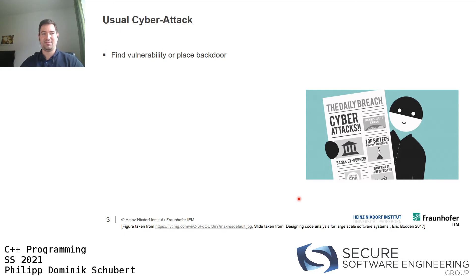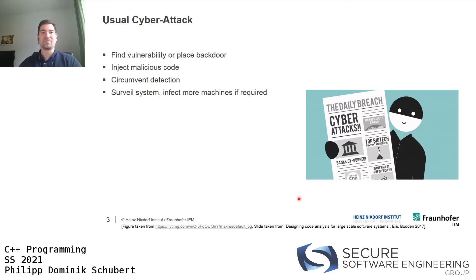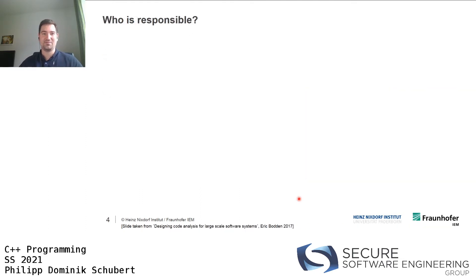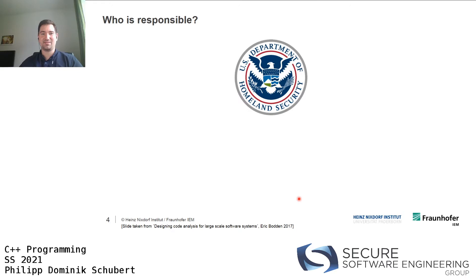After finding a vulnerability, the attacker needs to inject malicious code to infect the system, stay undercover, circumvent detection, survey the system, and infect more machines if possible. Then at some point they execute their payload and do some harm. So who is responsible for attacks succeeding?